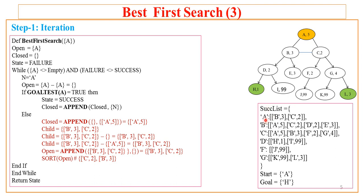Mugen is called for A. In the successor list, A is found, and child nodes B and C are returned and stored in child. From child, whatever is in open is removed — open is empty, so nothing is removed. From child, whatever is in closed is removed — closed has only A, which does not appear in child, so child remains B and C. Child B and C is added at the front of existing open. Open becomes B and C, but sort is called and sorts by heuristic value, making open C and B. With this new open, the next iteration executes.